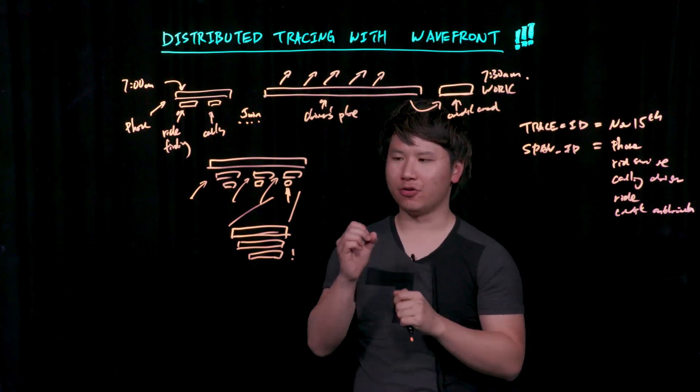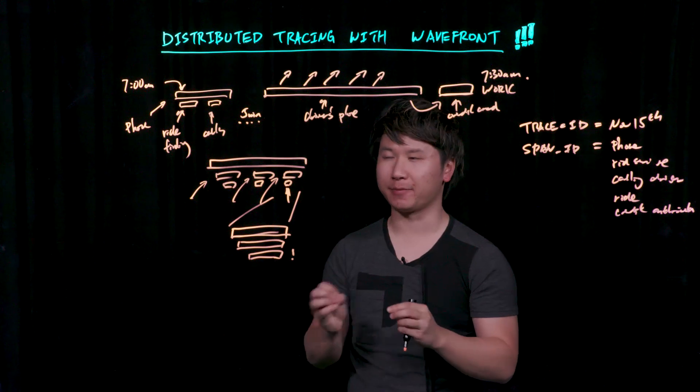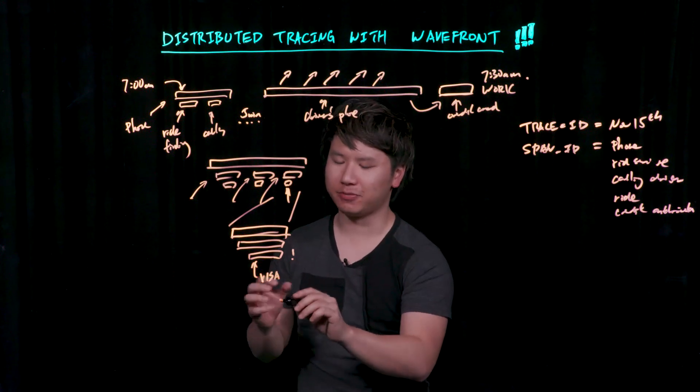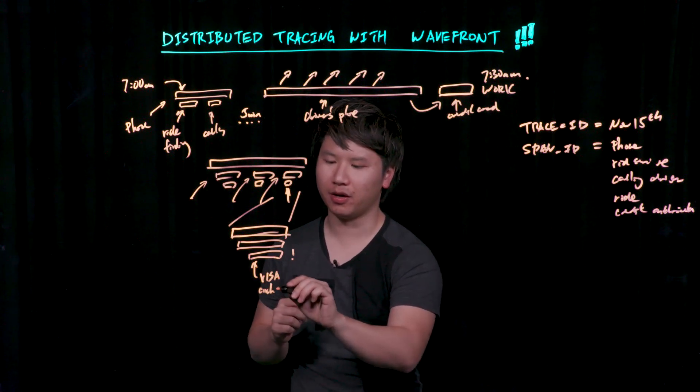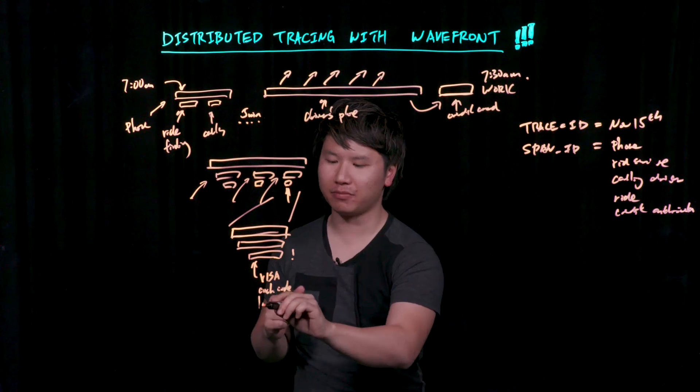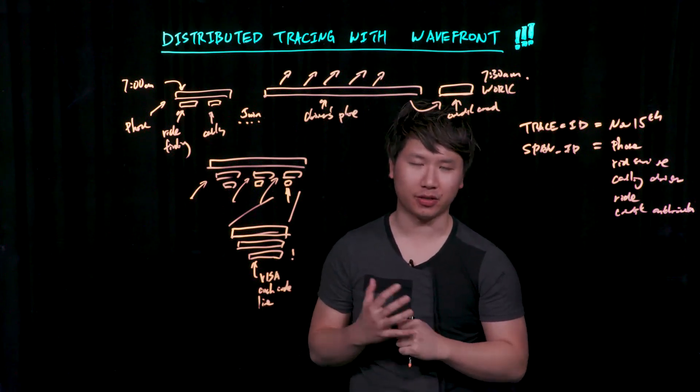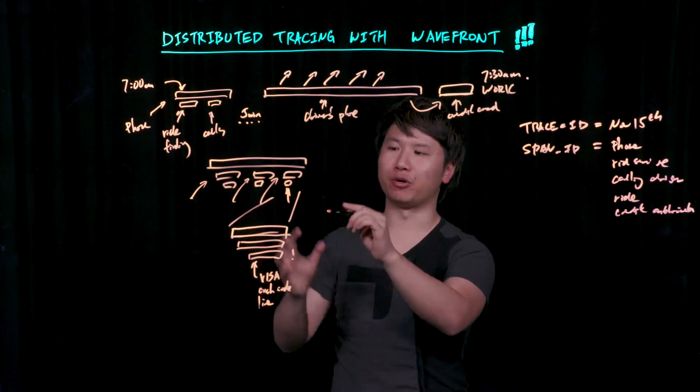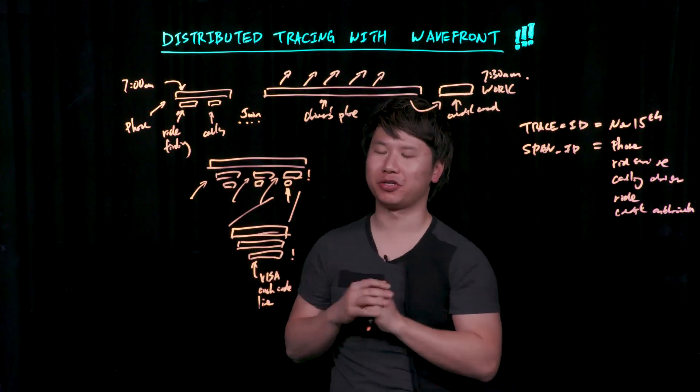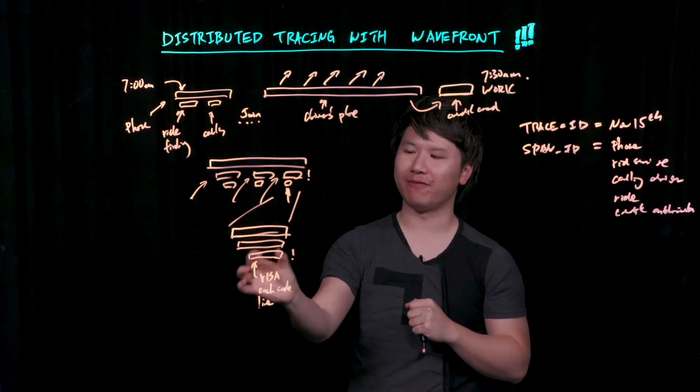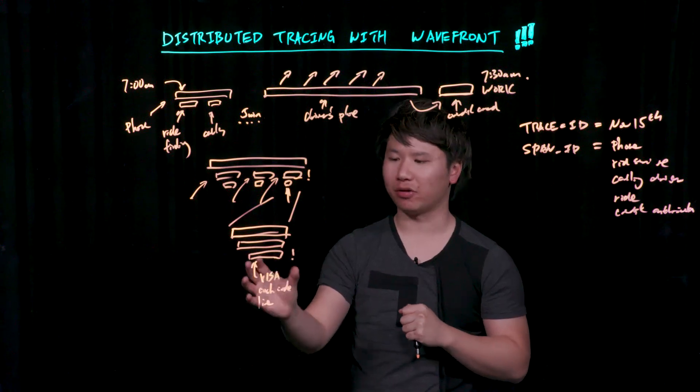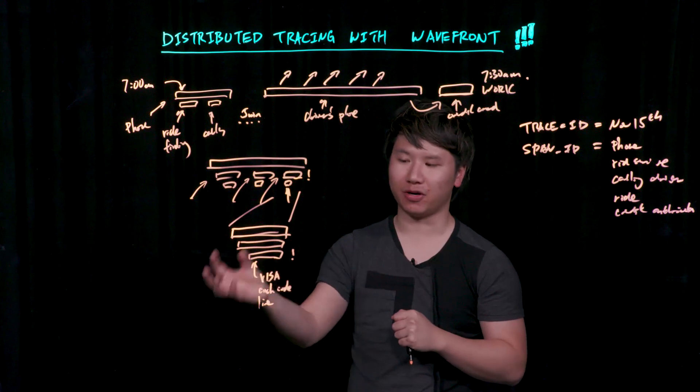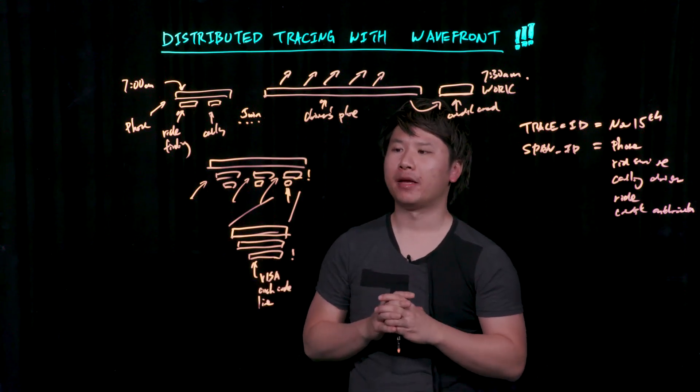You can drill through into that particular span and expand this section. You can see it's a particular span that's having a problem. With distributed tracing, you could add annotations to a single span. It could be authorization to, let's say, a Visa. You have some sort of auth code. You could even have a line number that indicates the problem in your code and any diagnostic information there. All of that is percolated upwards, maybe ultimately as an error message to the user. This enables you to drill down very quickly and find out it's actually credit card authorization. Maybe it's a problem with a payment processor, and you can figure out the best course of action to take.